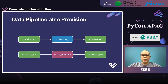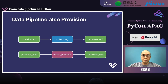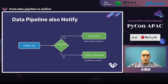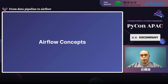Besides task scheduling, Amazon Data Pipeline also manages resources for the workflows. To be more specific, Data Pipeline provisions and terminates EC2 and EMR for tasks. And once a task is completed, the workflow manager also sends notifications. I have roughly introduced how KKStream's in-house workflow definition works. Let's talk about how Airflow manages workflows.